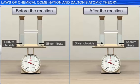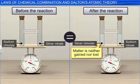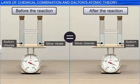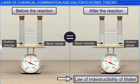Thus, we can conclude that when matter undergoes a chemical reaction, the total mass of the reactants is equal to the total mass of the products. That is, during any chemical reaction, matter is neither gained nor lost. Hence, this law is also called the law of indestructibility of matter.